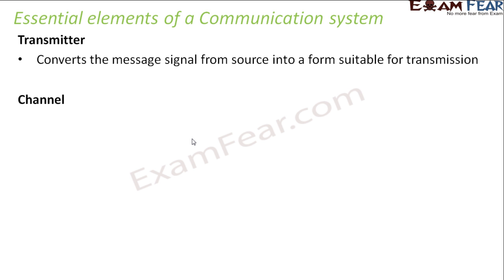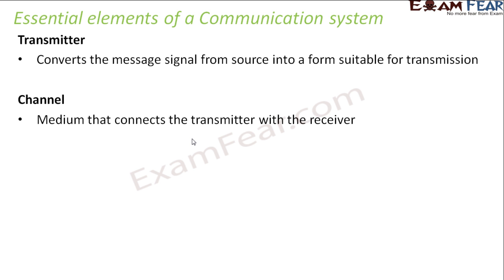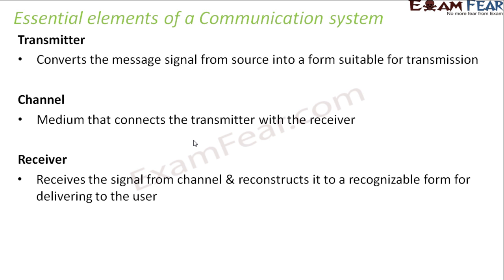The channel is a medium that connects the transmitter with the receiver. The transmitter's job is to convert the signal into a suitable form and send it; the receiver's job is to receive that signal. There has to be something which helps the signal move from transmitter to receiver — that is the channel, like the train. If there is no train, no rail, no aeroplane, the letter cannot travel from Delhi to Bangalore. The receiver receives the signal from the channel and reconstructs it into a recognizable form for delivering to the user.